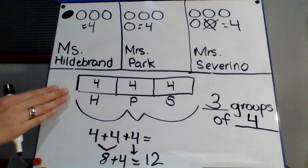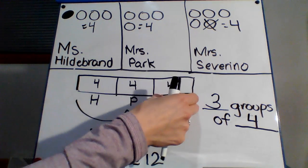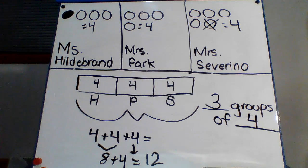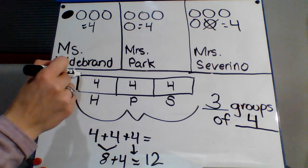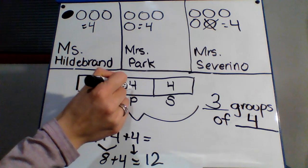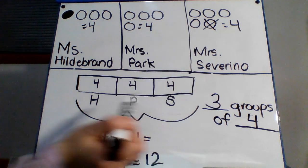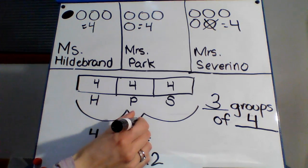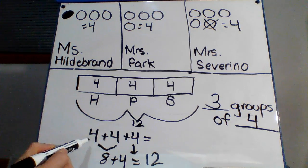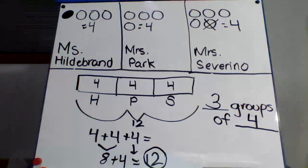Remember, this repeated addition sentence helps you to visually see the groups and the number that each group has inside of it. So this box represents a group of four. This box represents Miss Park's group of four. And this box represents Miss Severino's group of four. And all together, once we did our repeated addition sentence, to help us, we got 12 all together.